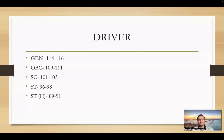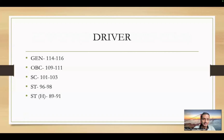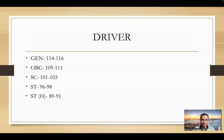For the Driver post: if you appeared for the Driver post, the number of posts is very low and the paper was generally easy, so the cut-off will definitely be high. General: 114 to 116. OBC: 109 to 111. SC: 101 to 103. ST: 96 to 98. ST Hills: 89 to 91. Because the number of posts is very low, the competition is high and the cut-off is high. Again, there is a plus or minus 5 marks margin — minus 5 is unlikely, but plus 5 is possible.